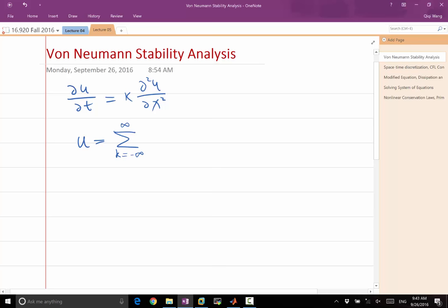k goes from minus infinity to infinity. u hat of k times e to the j, which is the square root of minus 1, times k times x.